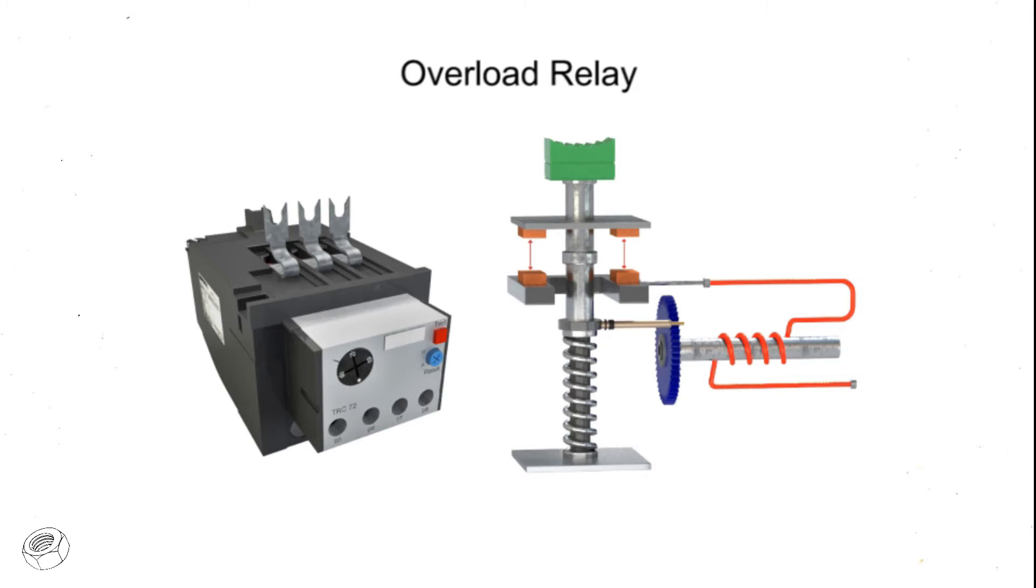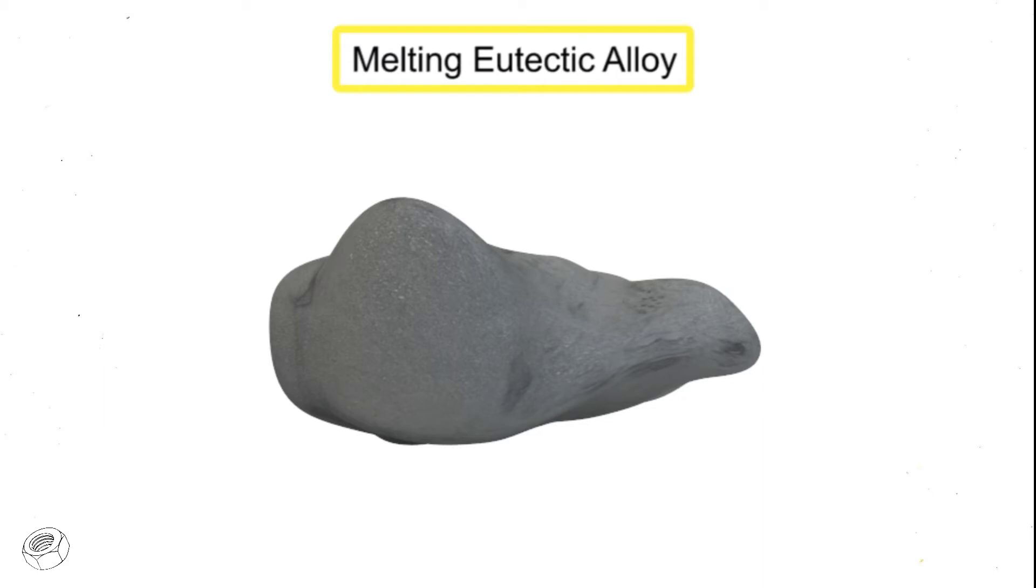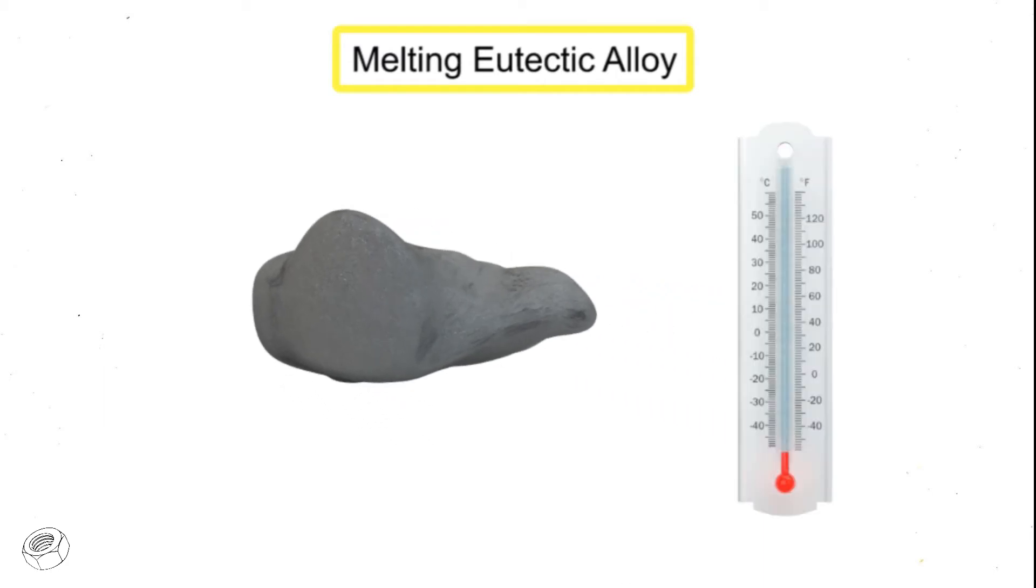The most common type of overload relay uses a melting eutectic alloy. A eutectic alloy is a specific type of metal that changes directly from a solid to a liquid at a fixed temperature.